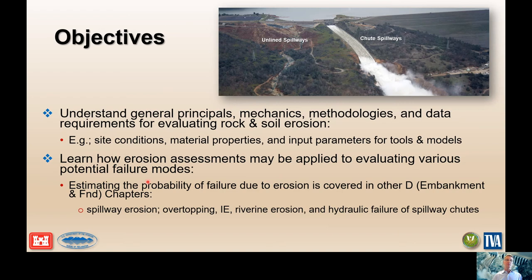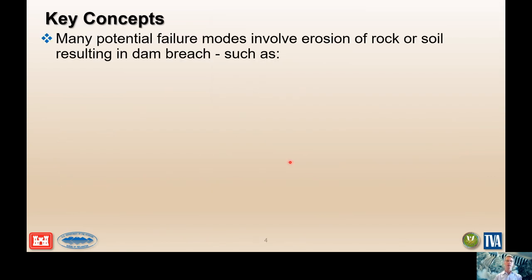Future chapters will cover probability of failure due to erosion in more depth, including spillway erosion, overtopping, internal erosion, riverine erosion, hydraulic failure, and hydraulic failure of spillway shoes. We're providing the framework and fundamental basics that will help understand and move forward into those chapters, because they'll reference key points made here.